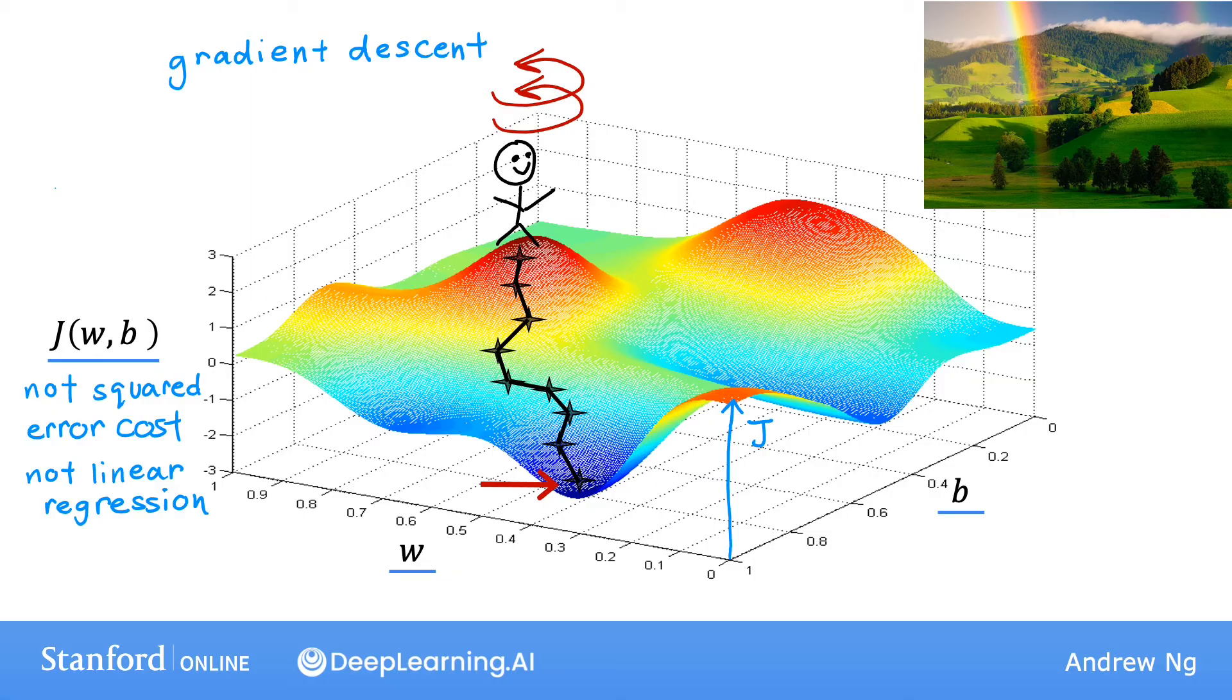It turns out gradient descent has an interesting property. Remember that you can choose a starting point at the surface by choosing starting values for the parameters w and b. When you performed gradient descent a moment ago, you had started at this point over here. Now imagine if you try gradient descent again, but this time you choose a different starting point by choosing parameters that place your starting point just a couple steps to the right over here. If you then repeat the gradient descent process, which means you look around, take a little step in the direction of the steepest descent, then you again look around, take another step, and so on. If you were to run gradient descent the second time, starting just a couple steps to the right of where we did it the first time, then you would end up in a totally different valley.